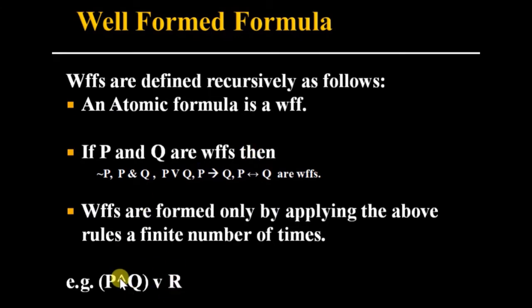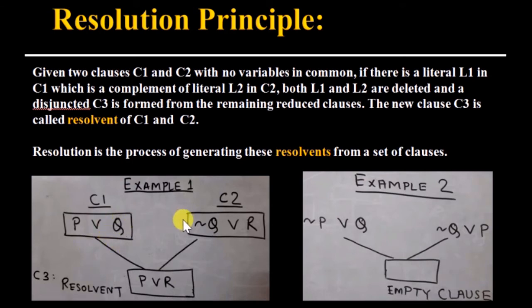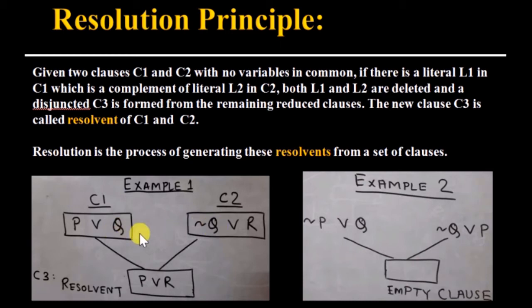Resolution is an inference process by which we derive new knowledge from existing knowledge. Given two clauses C1 and C2, we derive a new clause C3 using resolution. In C1 there is one literal Q which is the complement of literal NOT Q available in C2. When we apply resolution on C1 and C2, we get the resolvent clause P OR R — we delete Q and NOT Q because they are complements, and form a disjunction of the remaining literals.